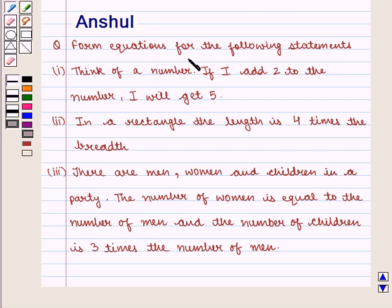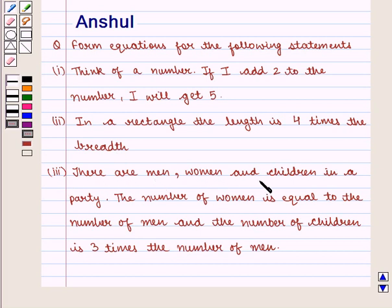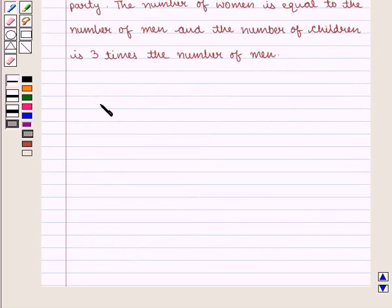Form equations for the following statements. First, think of a number — if I add 2 to the number, I will get 5. Second, in a rectangle, the length is 4 times the breadth. Third, there are men, women and children in a party. The number of women is equal to the number of men, and the number of children is 3 times the number of men.